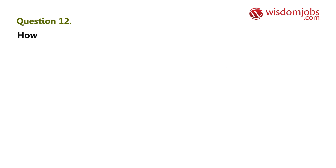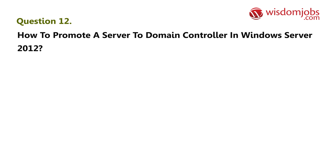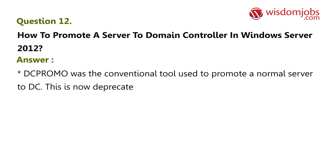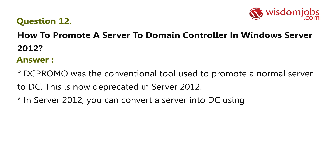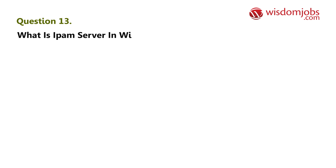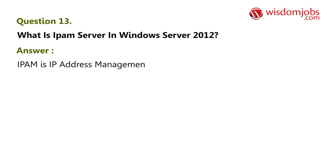Question 12: How do you promote a server to domain controller in Windows Server 2012? Answer: DCPromo was the conventional tool used to promote a normal server to DC, but it is deprecated in Server 2012. In Server 2012, you can convert a server into a DC using the Server Manager console — under Server Manager, add a new role: Active Directory Domain Services.